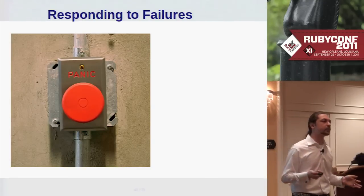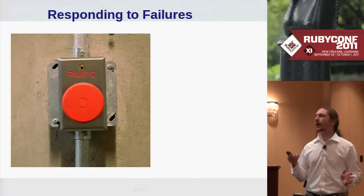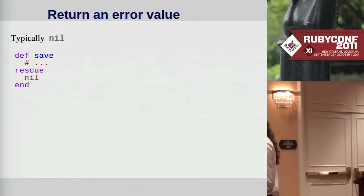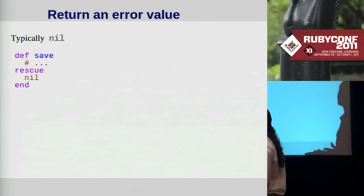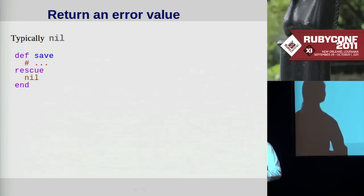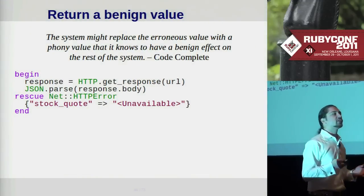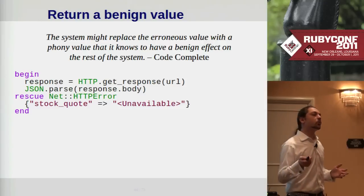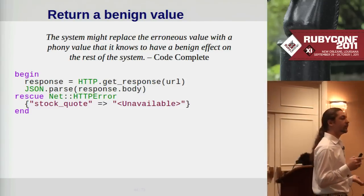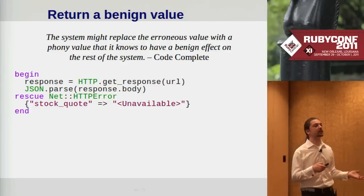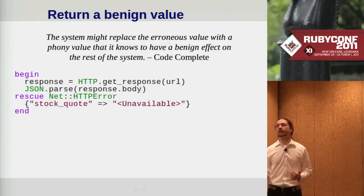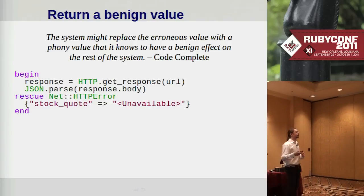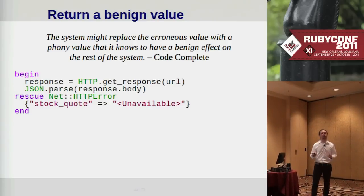Let's talk about how we respond to failures in programs. One way is simply to return some sort of error value — in Ruby, more often than not, this is nil. A related approach that can sometimes work better is to return some kind of benign value: something that more or less behaves like the expected return object but with placeholder values. This is useful when you don't want to force the caller to check the return value, and maybe the method isn't too vital.